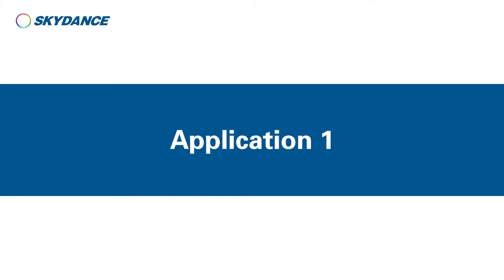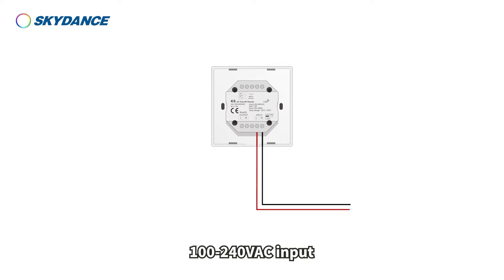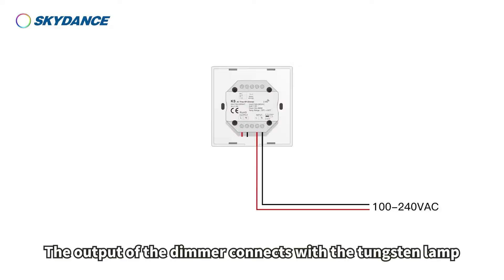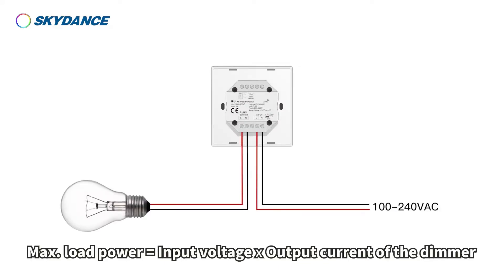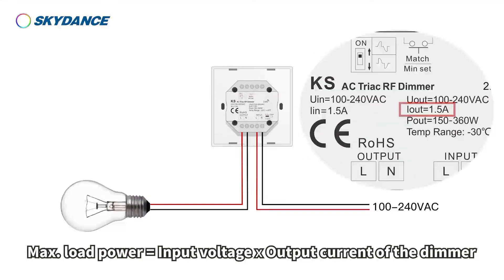Application 1: 100–240 volts AC input. The output of the dimmer connects with the tungsten lamp. Max load power equals input voltage multiplied by the output current of the dimmer.